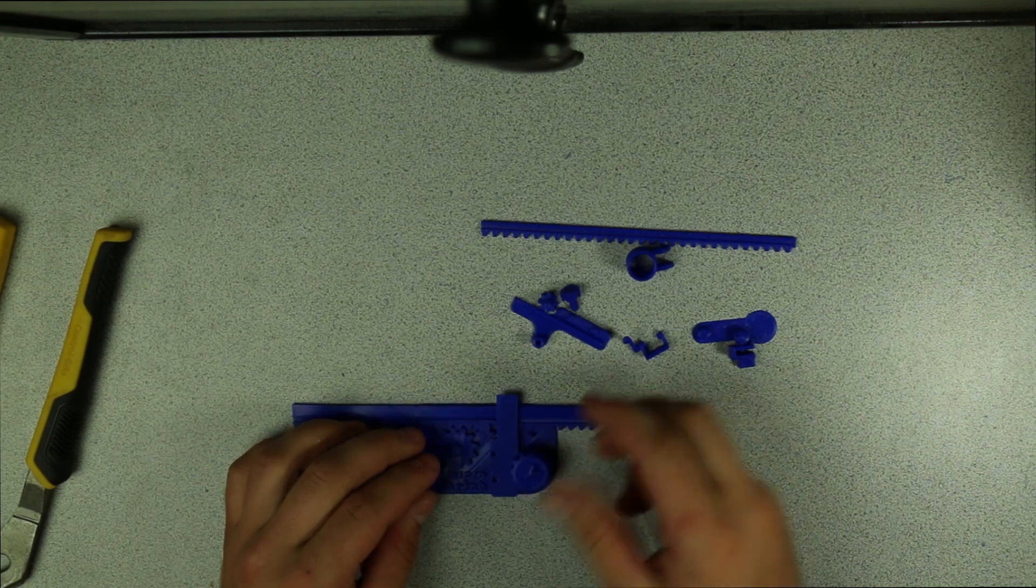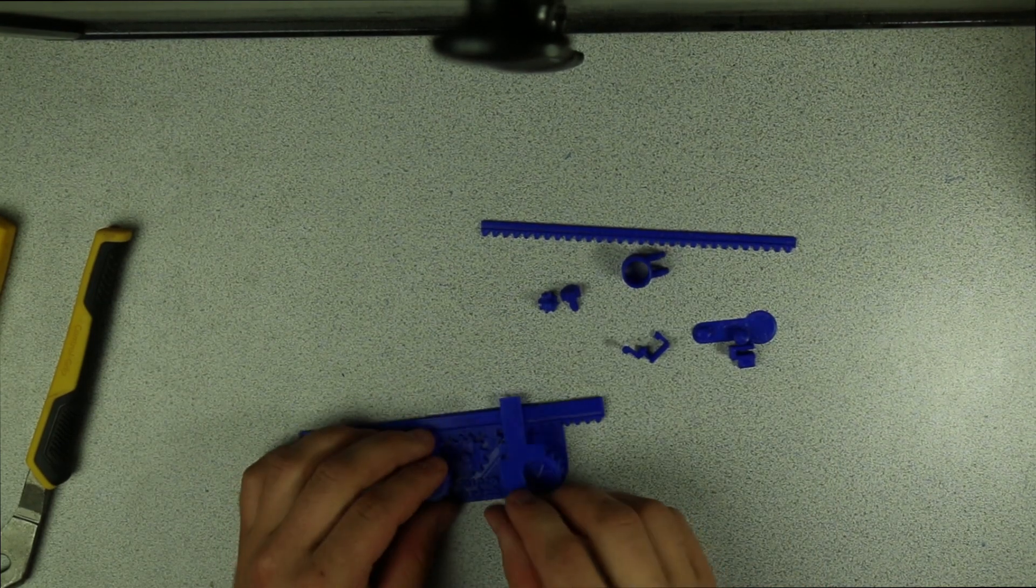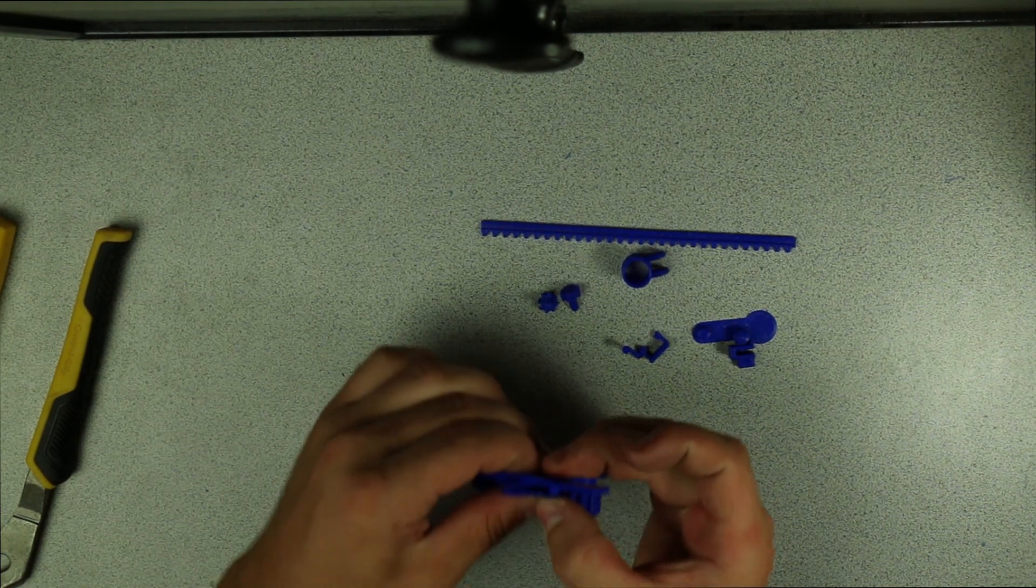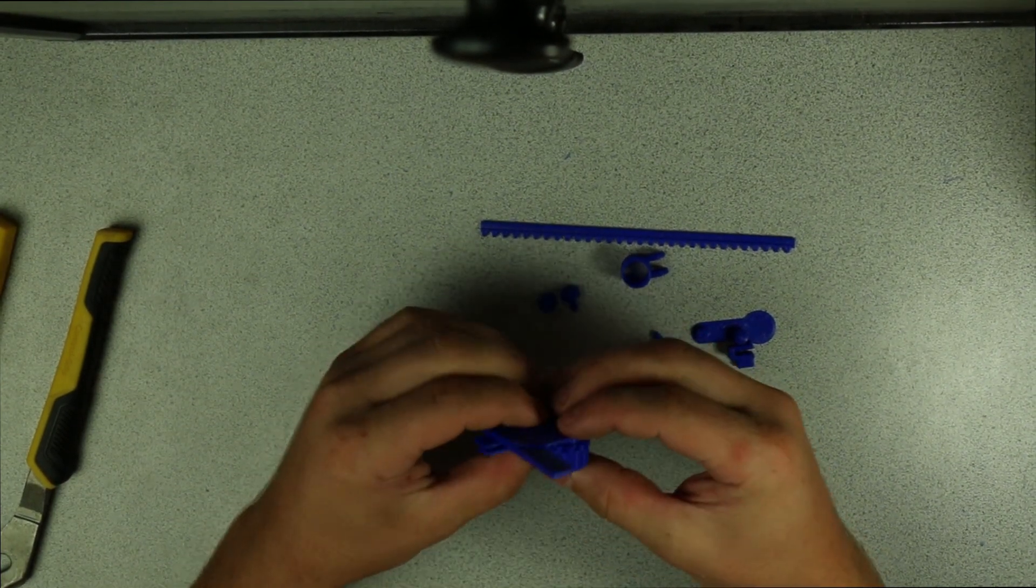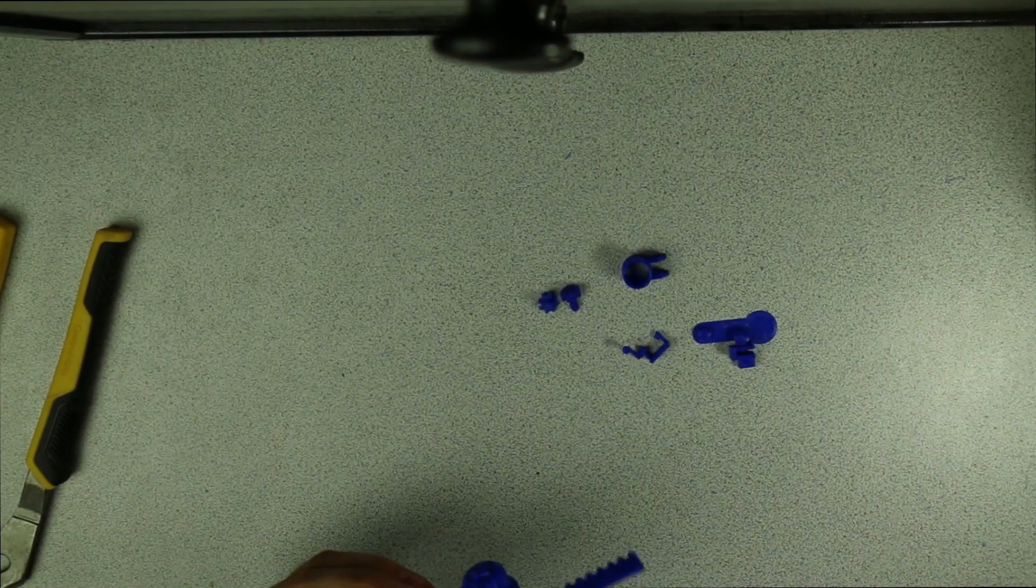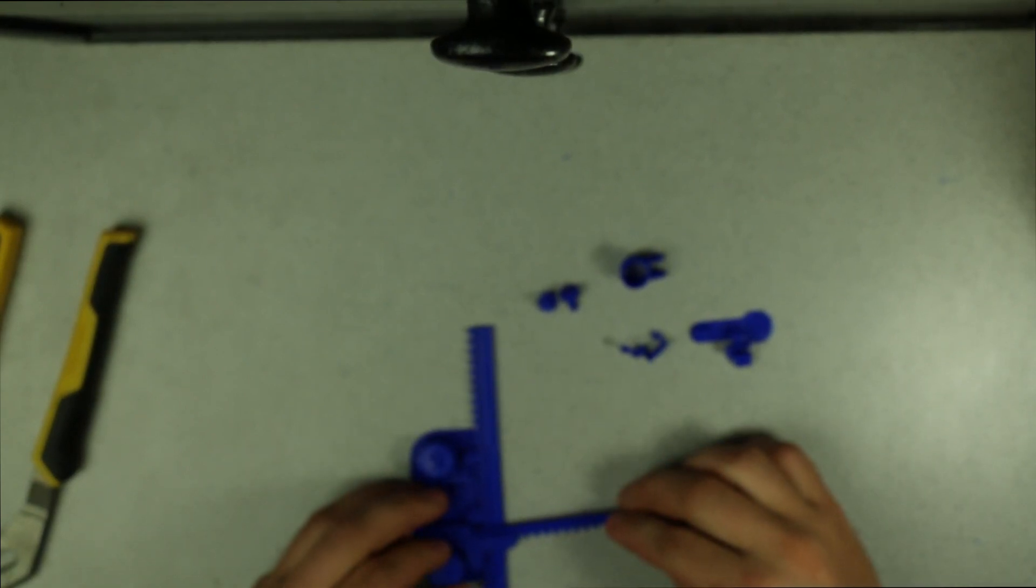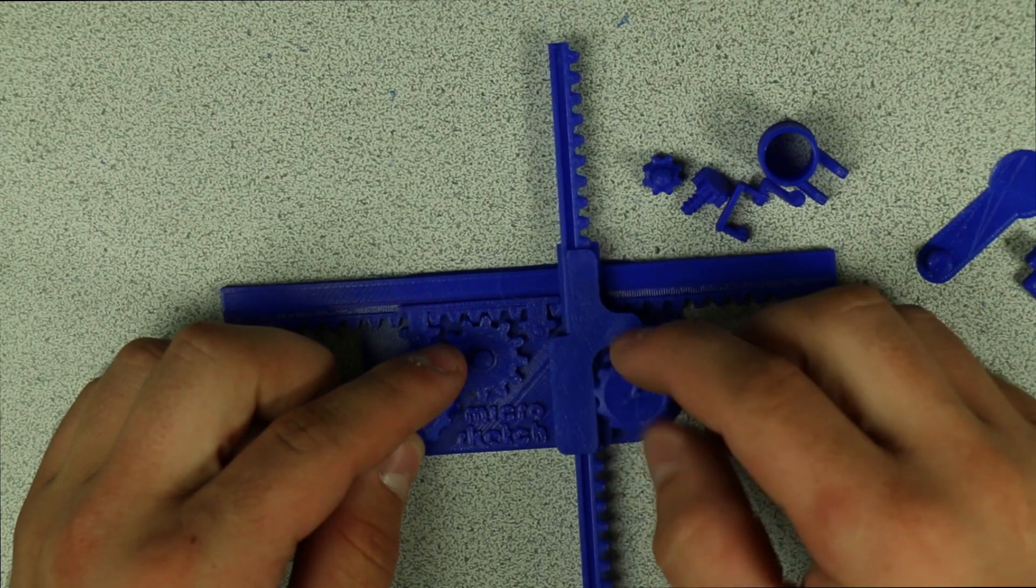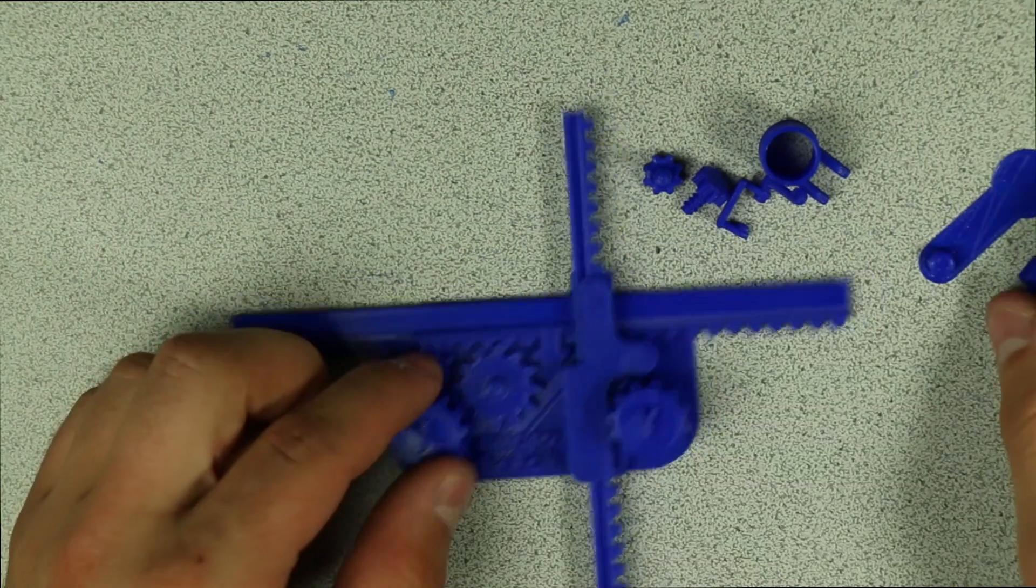That gear goes on like so, and then this piece moves on over here, it goes in right here so I can move like that. I believe this piece goes in like so. There we go, so now we have our X and our Y.